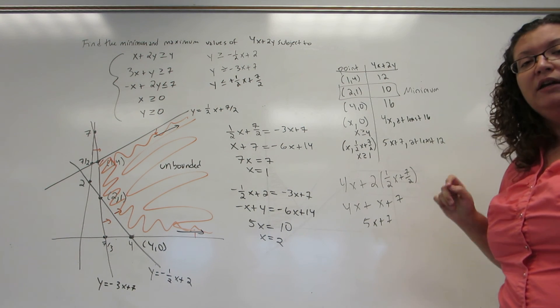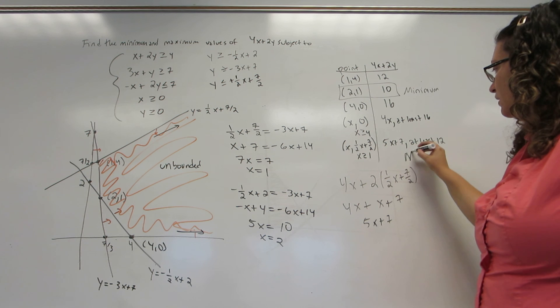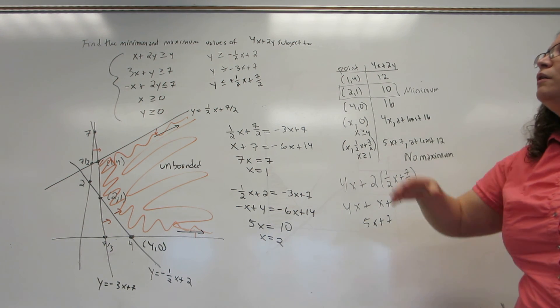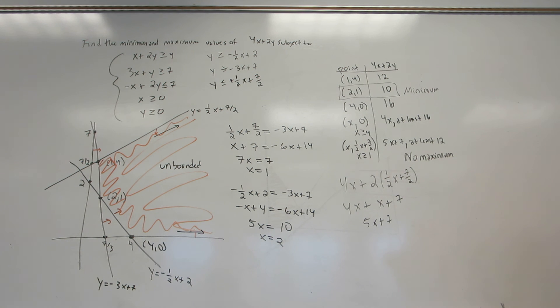And they're never going to stop getting bigger. This means that there is no maximum achieved for the objective function subject to these constraints because it keeps on getting bigger along those boundary lines.